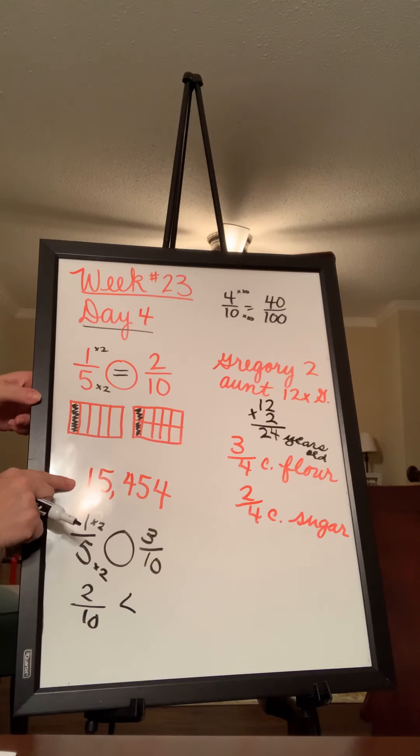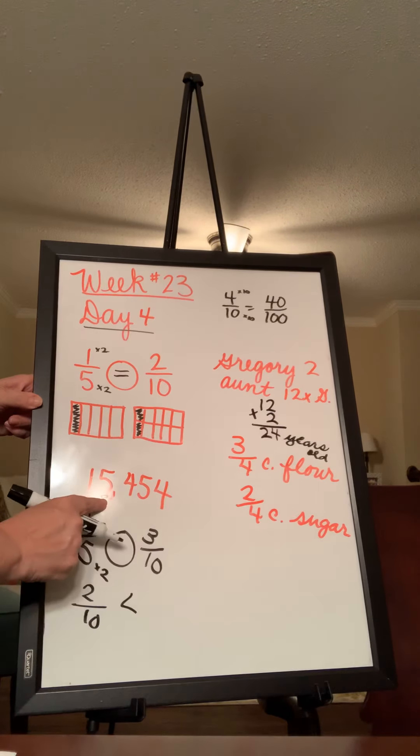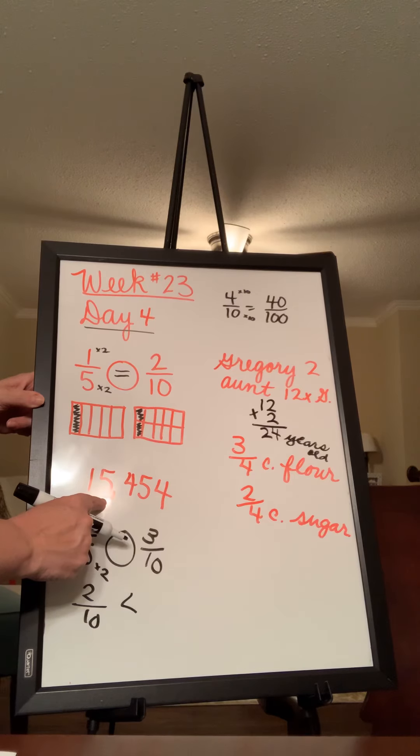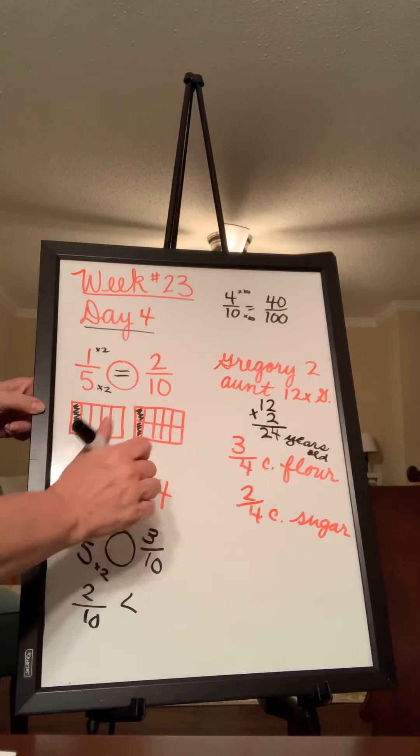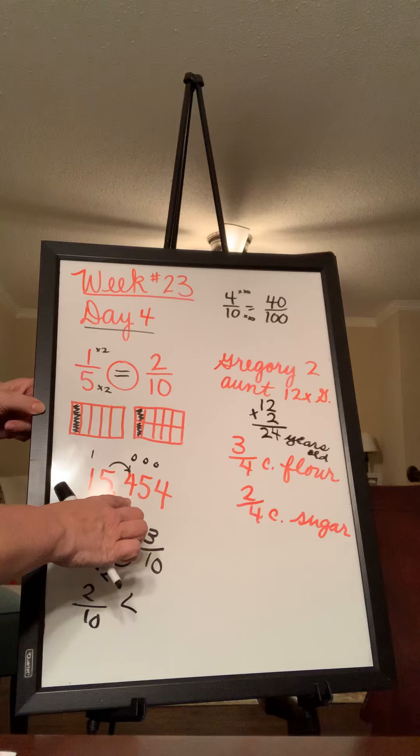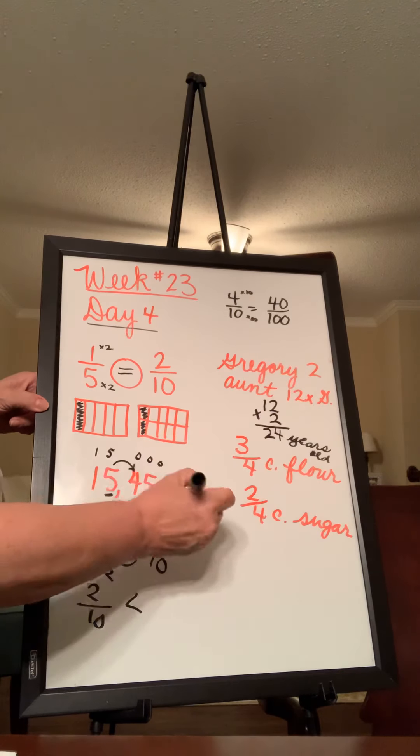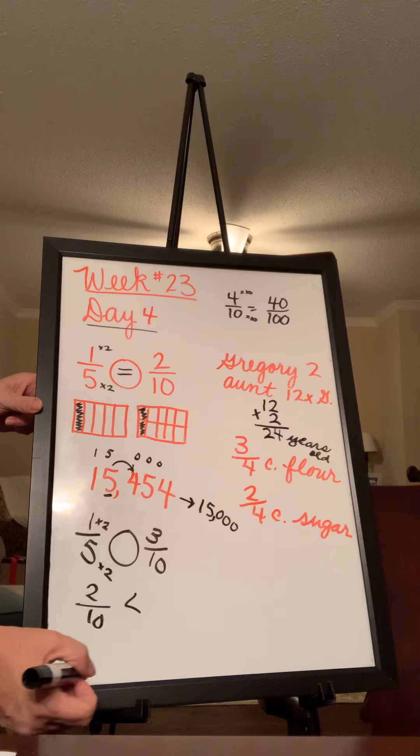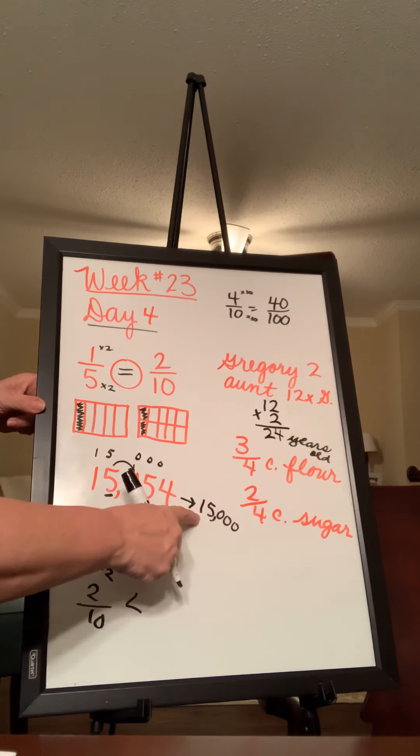Next is round 15,454 to the nearest thousand. So find your thousands. And remember, everything after this will become a zero. This number will either stay the same or go up, and this number will stay the same. So we look to the right of this number to decide what to do with this one. Because we already know this is going to be zero, zero. And this is going to be one. We're just trying to figure out this one. Well, zero through four hit the floor. So that tells us that five is going to stay the same. So our answer then is 15,000. The four is too low to make this go up, so it stays a five. So 15,000.